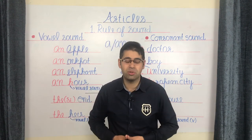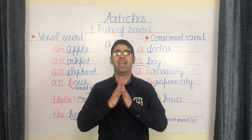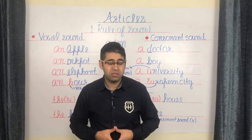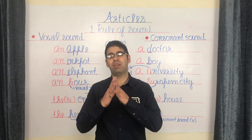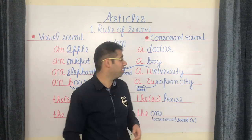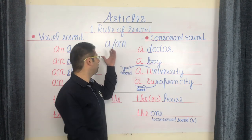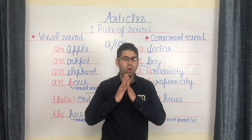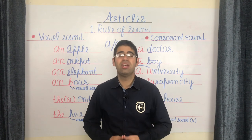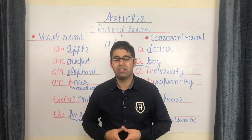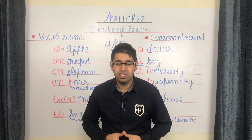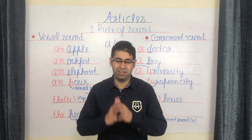Your vowel sounds are all those born of the five vowels A, E, I, O, U. Whereas consonant sounds are all the sounds stemming from the remaining 21 letters of the alphabet. Now, let's discuss the usage of the articles A and AN. The simple rule is that whenever a spelling begins with a vowel, it receives the article AN, whereas if a spelling begins with a consonant, then the article of choice is A.